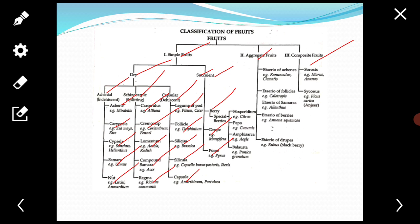A few different kinds or types of berries, that is special berries: one is hesperidium, second is pepo, third is amphisarca, fourth is balausta.